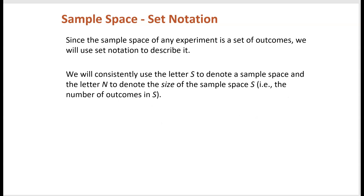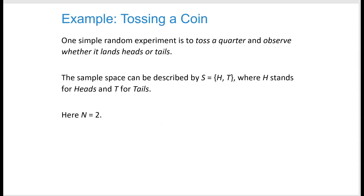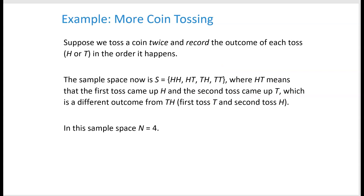When we talk about sample space we use the letter S. When tossing a quarter it could be heads or tails — we use curly brackets to say the only things that could happen are heads or tails. If we were to flip it twice we'd have different outcomes: heads-heads, heads-tails, tails-heads, or tails-tails. So we'd have a sample space of four different outcomes.